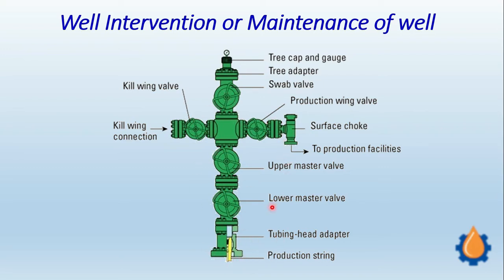This production tree, or Christmas tree, is an apparatus to control and regulate the production and pressure. Some measurement and inspection of the well is also done — specifically inspection of the quality of the hydrocarbon: what is the content of the hydrocarbon and how much percentage of hydrocarbon is there in the well fluid. All this monitoring is done with different apparatus fitted outside and sometimes on the Christmas tree itself.